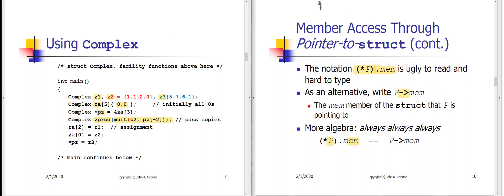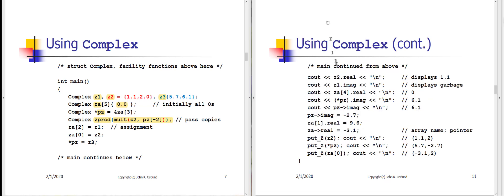On slide 11, we have the bottom part of the main function. 'z2' is a complex object, so we access its real part directly with 'z2.real'. Likewise, 'z1.imag' directly accesses z1's imaginary part. z2.real will be 1.1, which is a valid value, but z1 is not initialized, so z1.imag will display garbage.